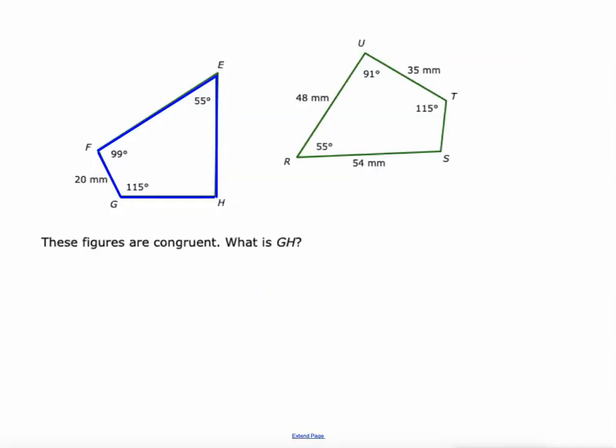All right, let's move on to this pair of shapes. These figures are congruent. I'm going to find the measure of GH. All right, again let's think about it like this: GH goes from G to H here. All right, we know that angle G is a 115 degree angle.